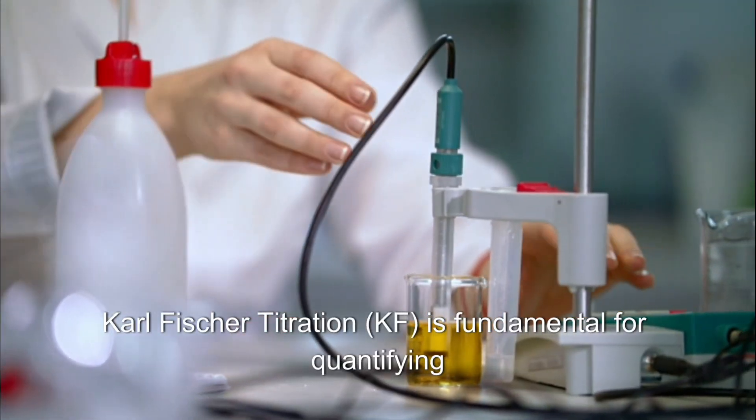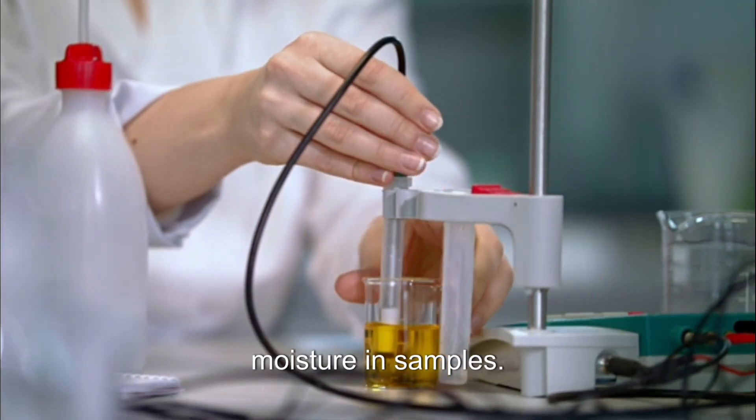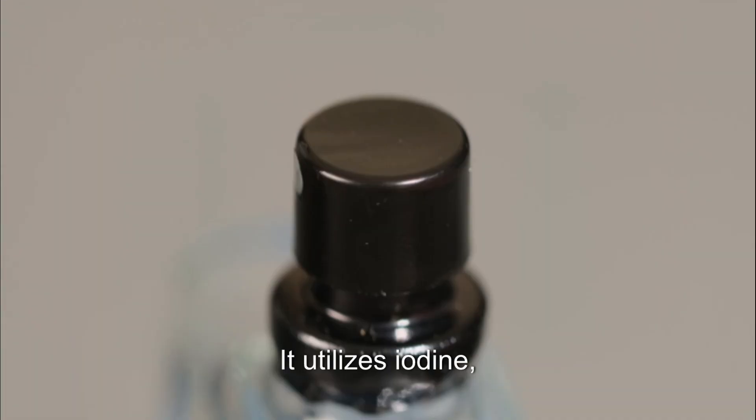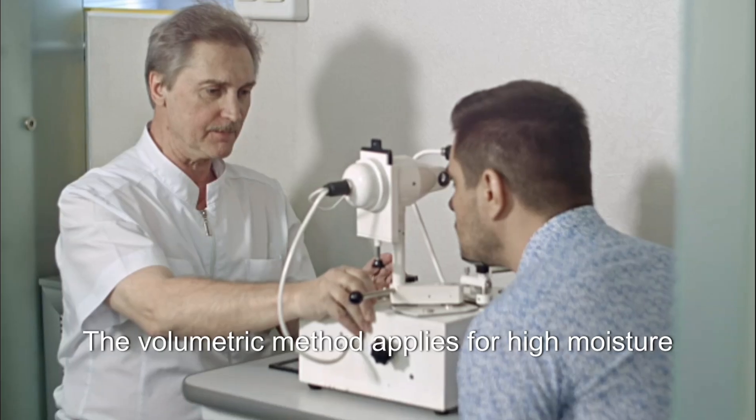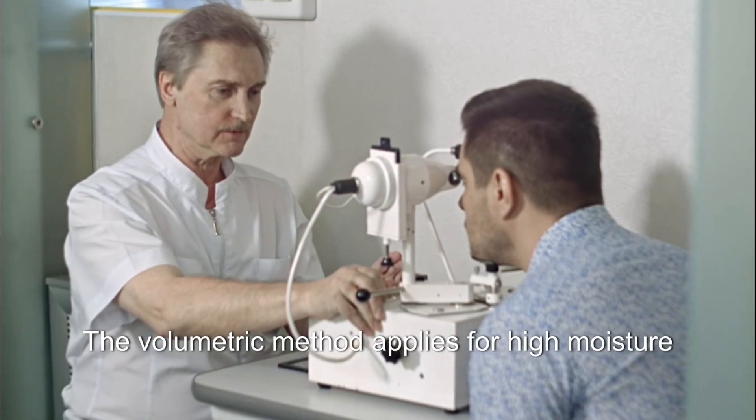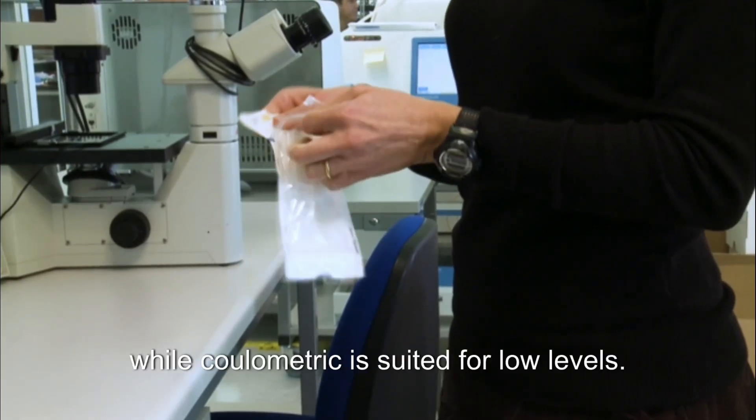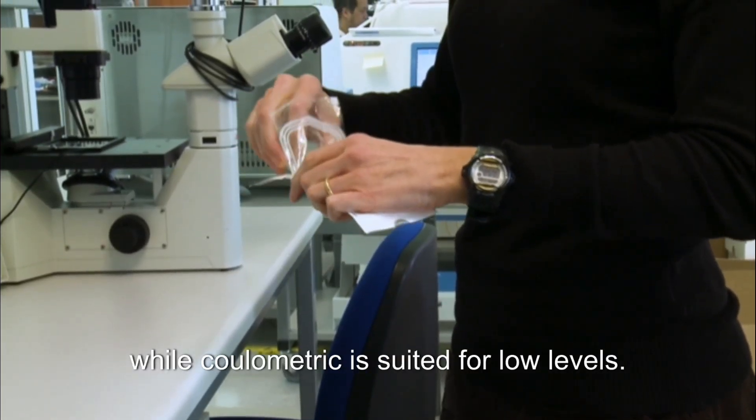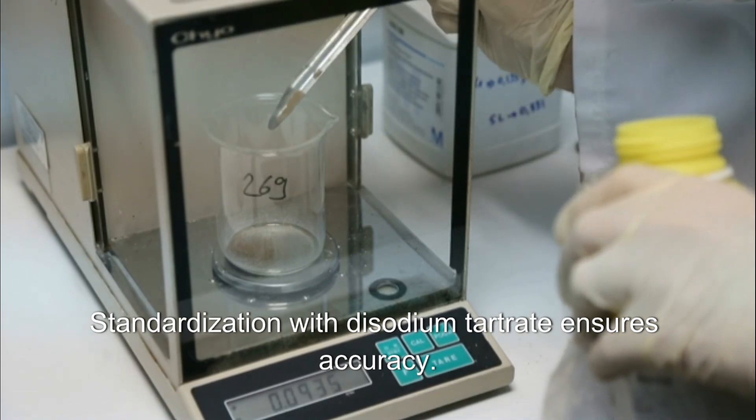Carl Fischer titration KF is fundamental for quantifying moisture in samples. It utilizes iodine, sulfur dioxide, a base, and an alcohol. The volumetric method applies for high moisture content while coulometric is suited for low levels. Standardization with sodium tartrate ensures accuracy.